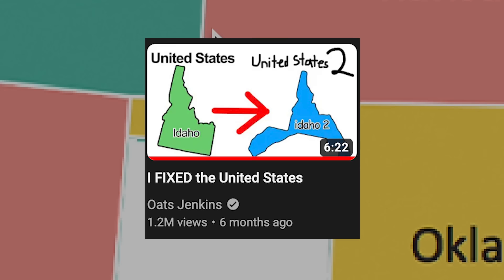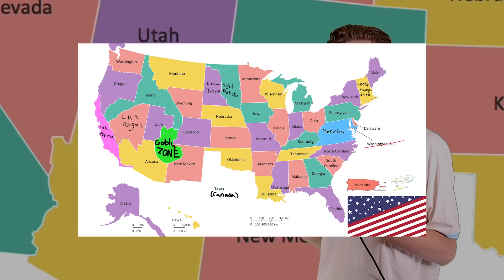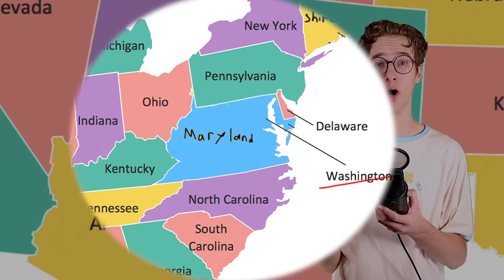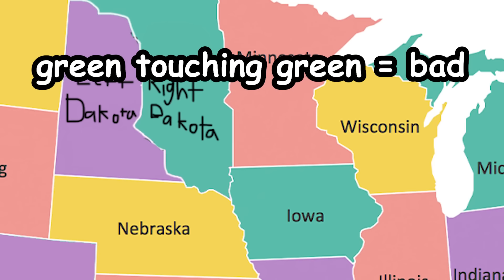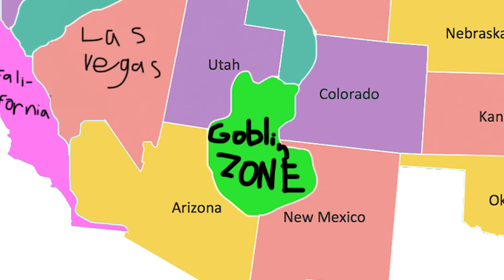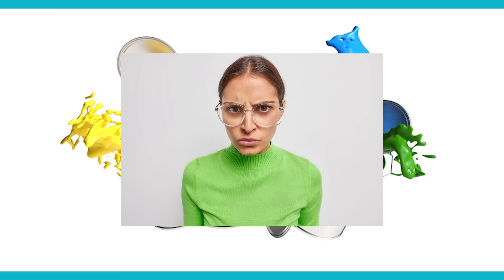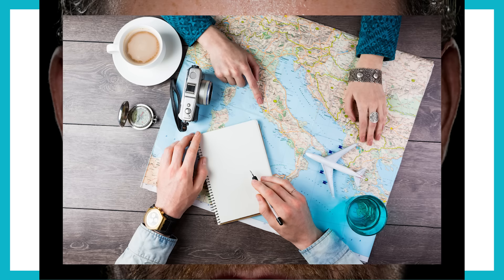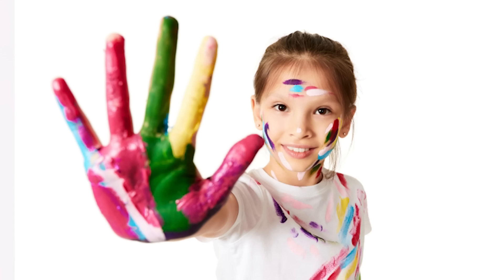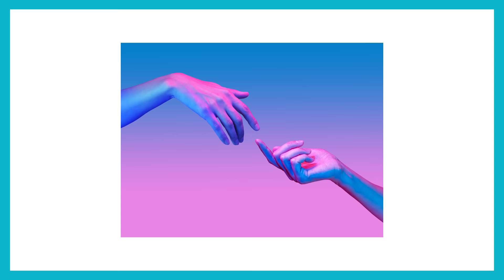This is the most frustrated I've been in a long time. I made a video a while back fixing the United States, and when I made the new map, I added a few colors because I didn't want a color to touch another of the same color — resulting in the Green Goblin Zone. But apparently there's a rule that you always have to follow: you're limited to four colors, no matter what. This guideline bothered me so much that I made it my mission to create a map that needs five colors minimum for the colors to not touch another of the same color.